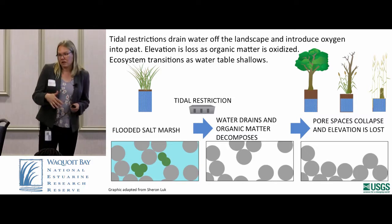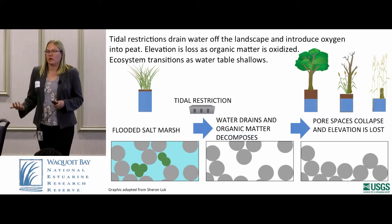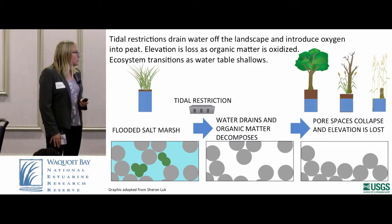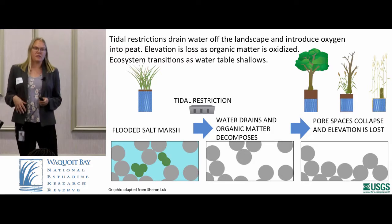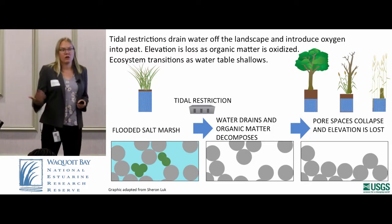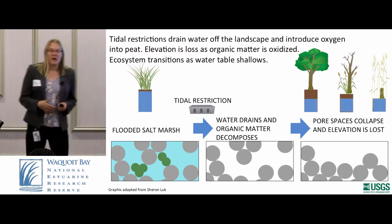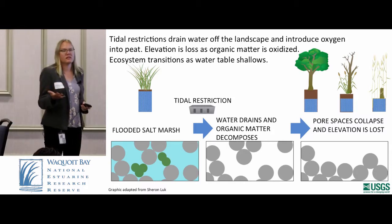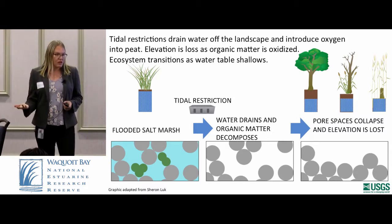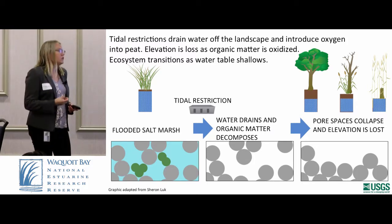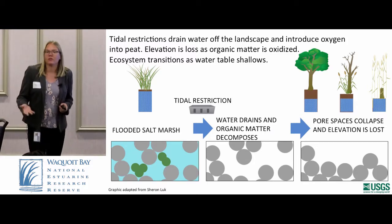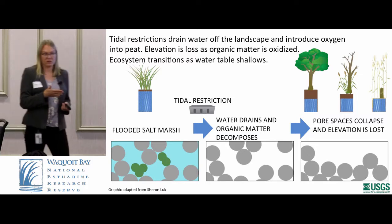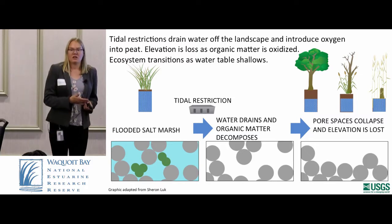When you drain a system — which can happen when you put in a tidal restriction and lower the water table — you remove that water, and in its place the soil exchanges with the atmosphere, letting oxygen in. Oxic respiration is a microbial process much faster than anoxic respiration, and you can lose that organic matter. You're able then to lose material that has been built over hundreds of years, and that all goes away.